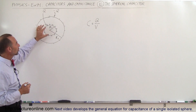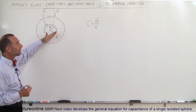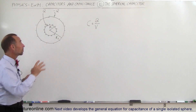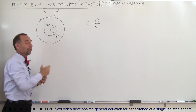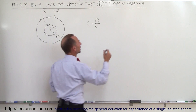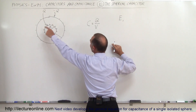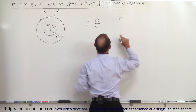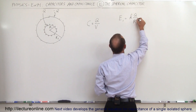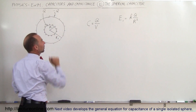To find the potential difference between the two spheres, let's first define the electric field outside the inner sphere. Since the electric field is only determined by the charge on the inner sphere — and not the charge on the outer sphere, because you're inside the outer sphere — we can say that the electric field E sub 1, caused by the inner sphere, is equal to K times Q divided by R squared, where R is any value between R1 and R2.